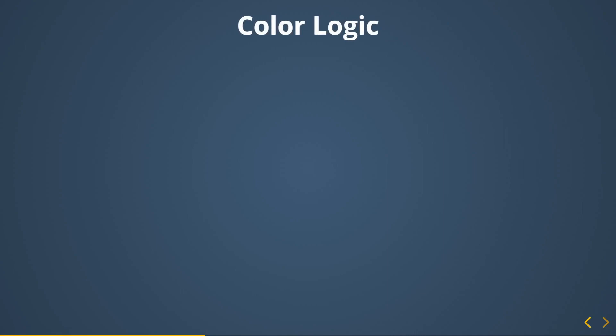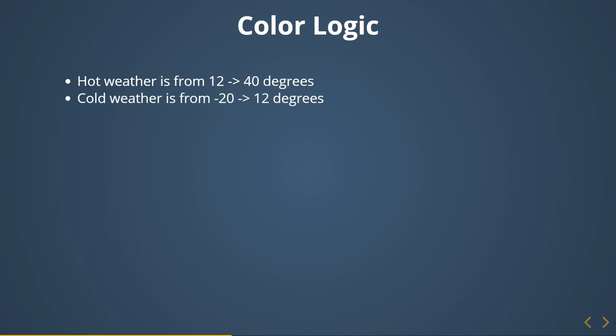Let's talk about the color logic and how we're going to implement it first, before we go ahead and code it in React. We need to make some arbitrary decisions. I've decided that hot weather is any weather from 12 degrees to 40 degrees Celsius, and cold weather is from negative 20 degrees to 12 degrees Celsius. So any temperature between negative 20 and 40 belongs to one of the two groups.